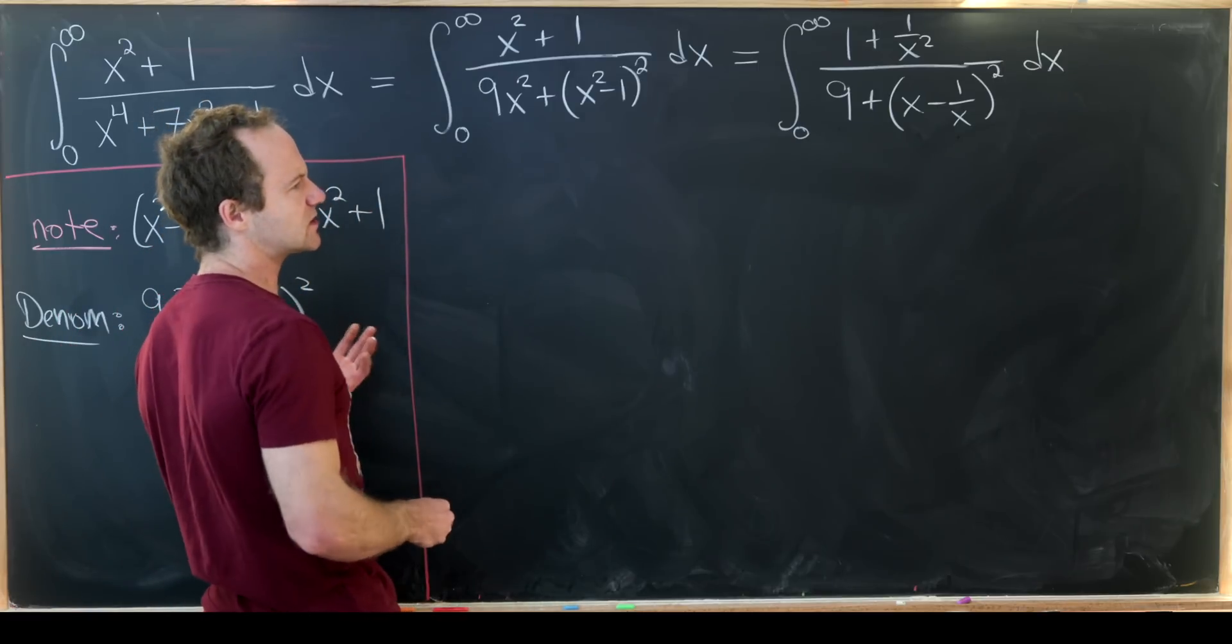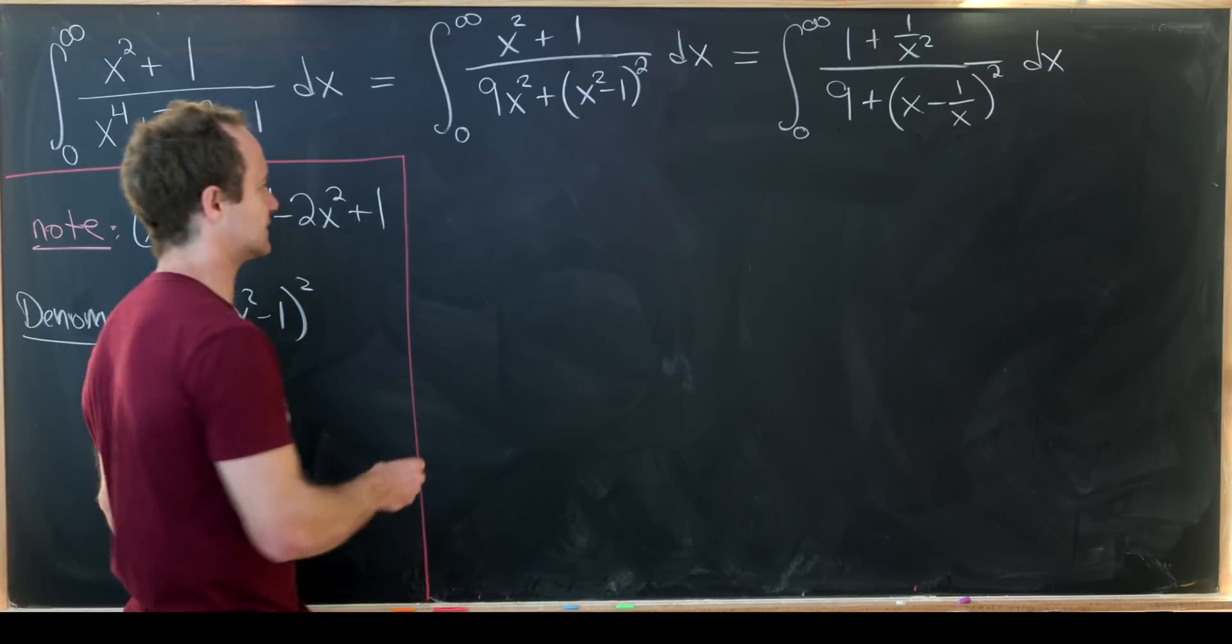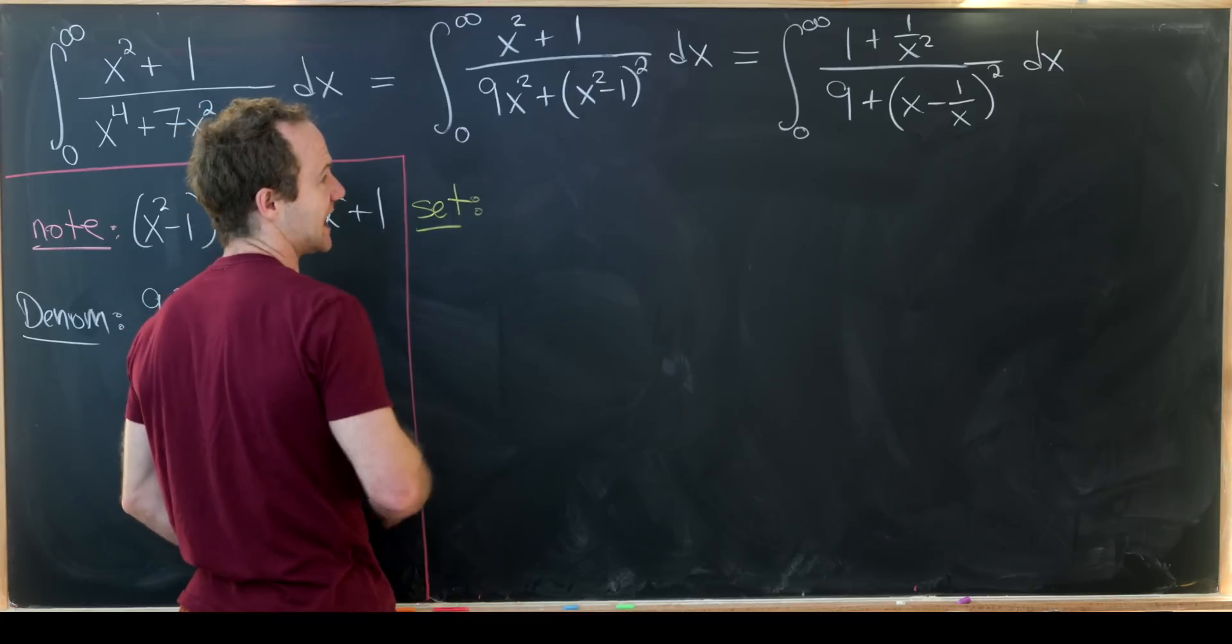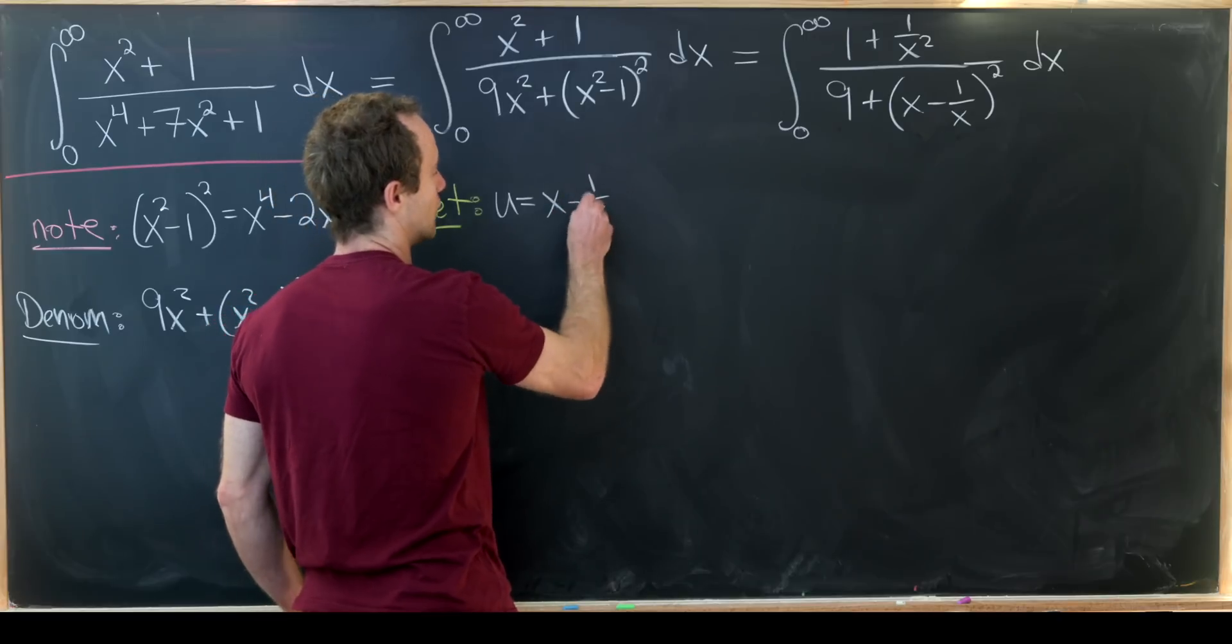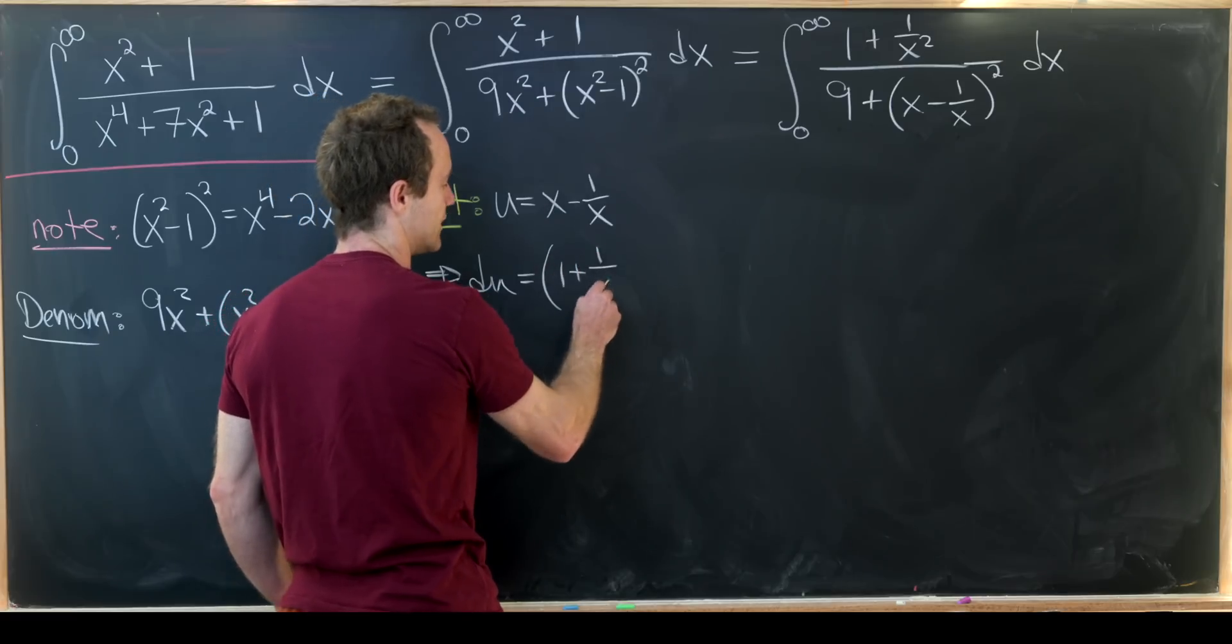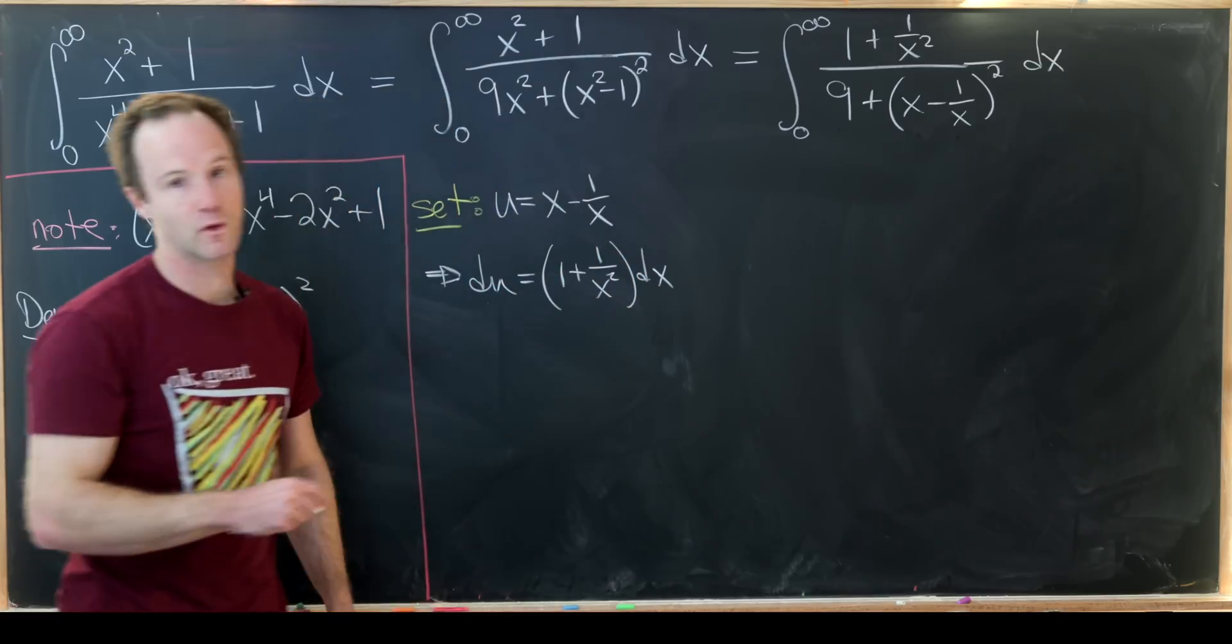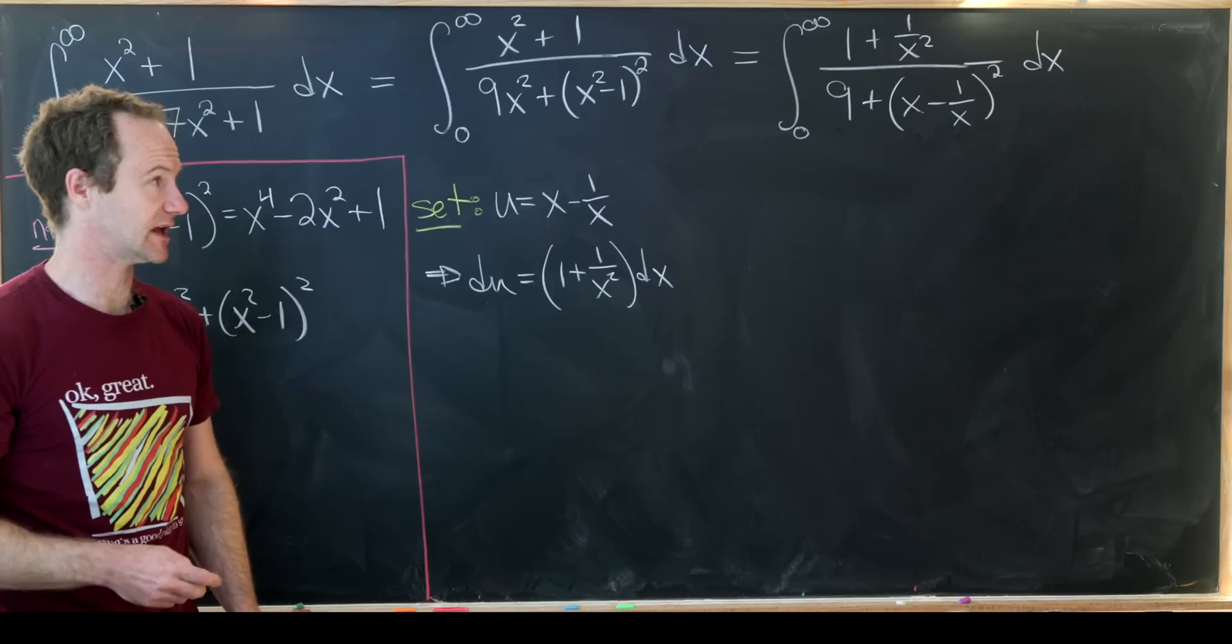Okay, so let's look at the substitution we just alluded to. Let's set u equal to x minus 1 over x. Taking the derivative using the power rule we get du is 1 plus 1 over x squared dx. We think about that 1 over x as x to the minus 1, so that's why the minus sign cancels.